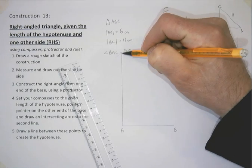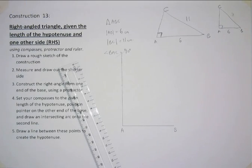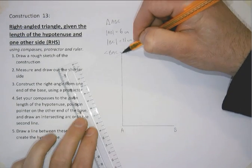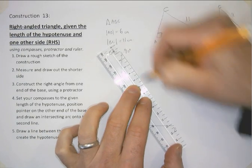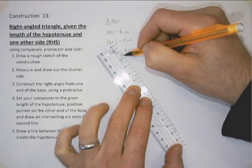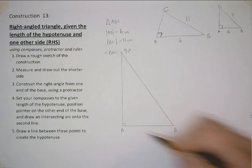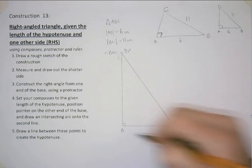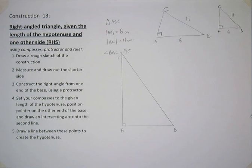So now you can just about see there we've got our intersecting point with B. Connect to that. We now have our right angle triangle A, B, C. There we go.